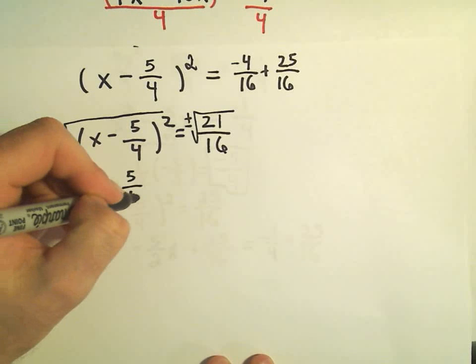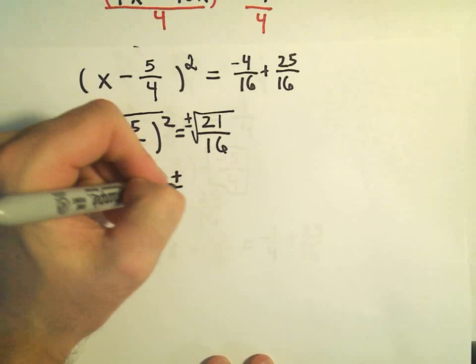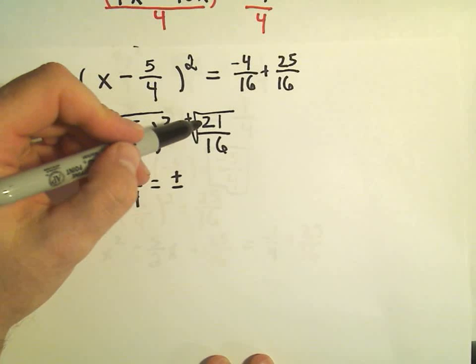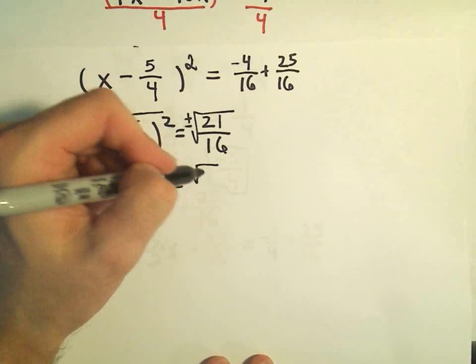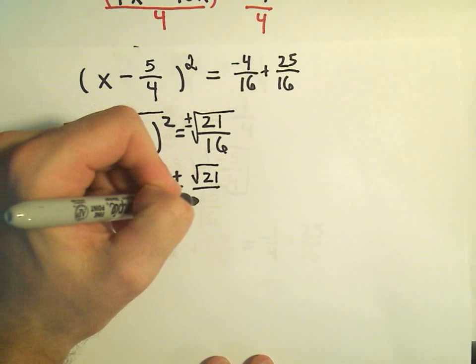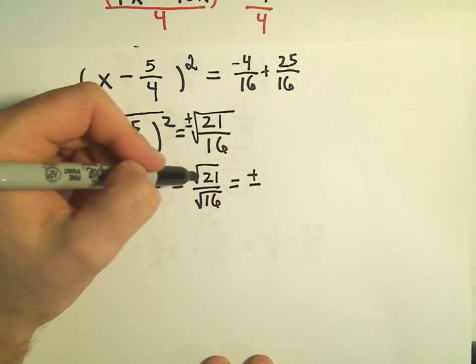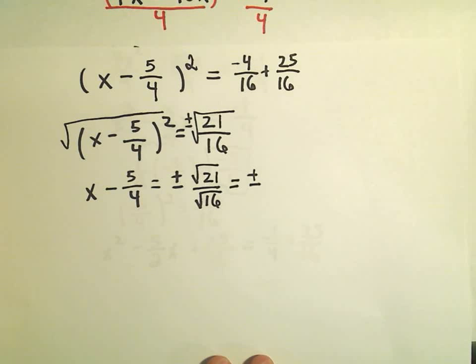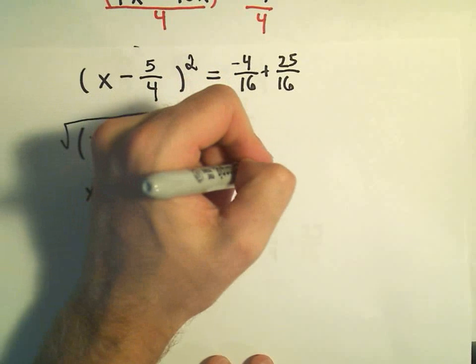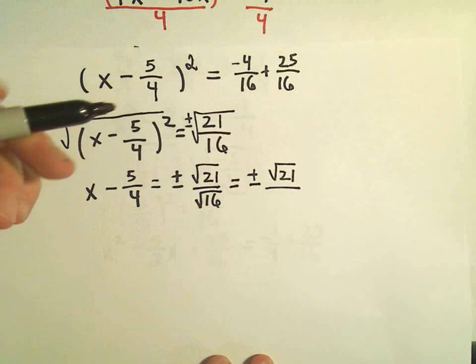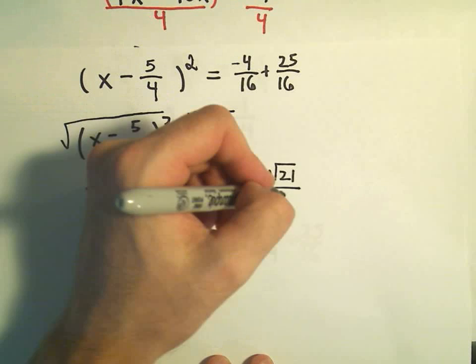So then we have x - 5/4 = ±√(21/16). But we can break this up as the √21 over the √16. I don't think we can really simplify down the √21 very much. So I'm just going to leave that part alone. But notice in the denominator, we get the √16, which is 4.